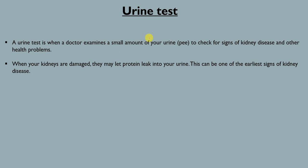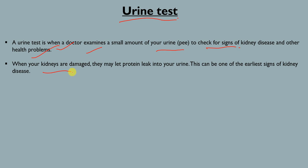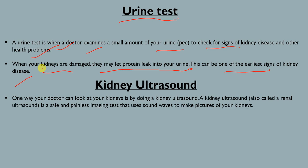Another kidney function test is the urine test, where a small amount of urine is examined by the doctor to check for signs of kidney disease and other health problems. When your kidneys are damaged, they may let proteins leak into the urine, and this can be one of the earliest signs of kidney disease.